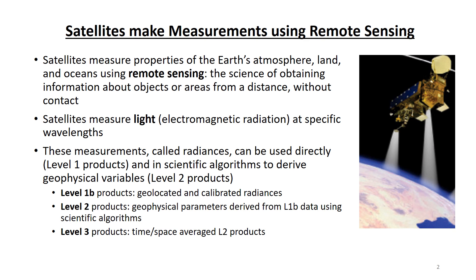Satellite radiances are also used in scientific algorithms to derive geophysical parameters. An algorithm is a step-by-step procedure or formula used to obtain a specific result. These satellite products, derived from Level 1B radiances, are called Level 2 products. Examples of Level 2 products you might encounter are fire radiative power, aerosol optical depth, and volcanic ash detection and height.